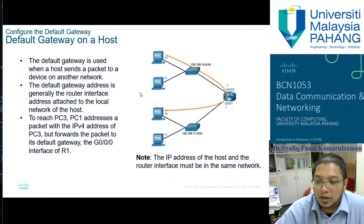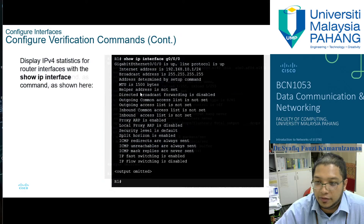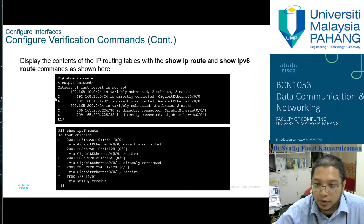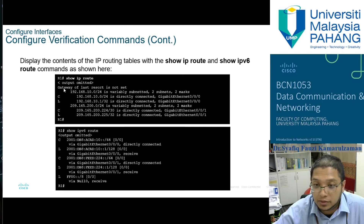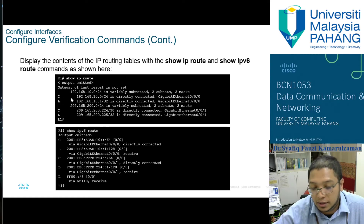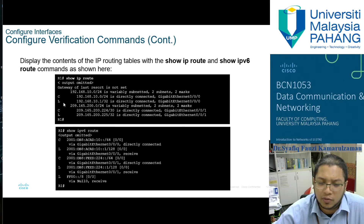Regarding the 'C' and 'L' symbols in the routing table: 'C' and 'L' represent the connection type between the router and the address connected to it. Based on the type of connection, you may also see other symbols such as 'S' for static or 'E'. 'C' means directly connected. You can check the full list of symbols yourself.